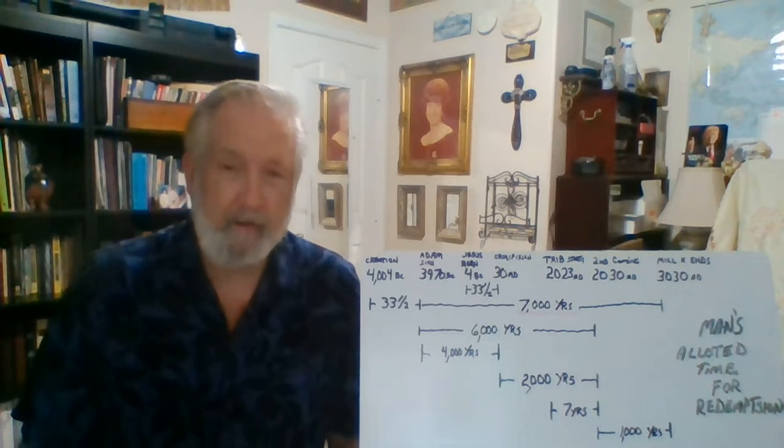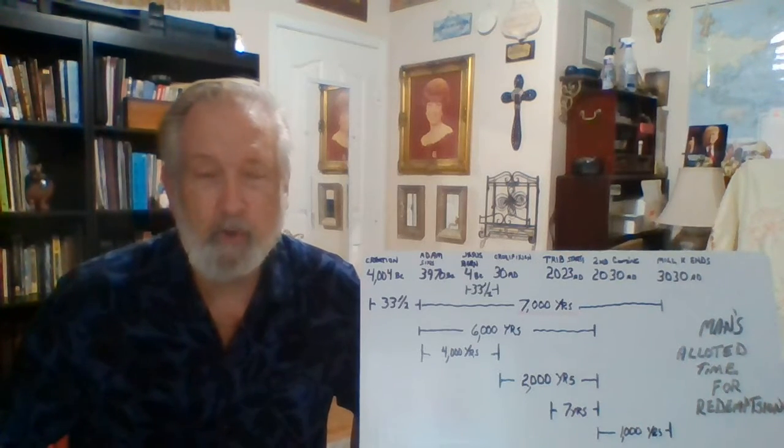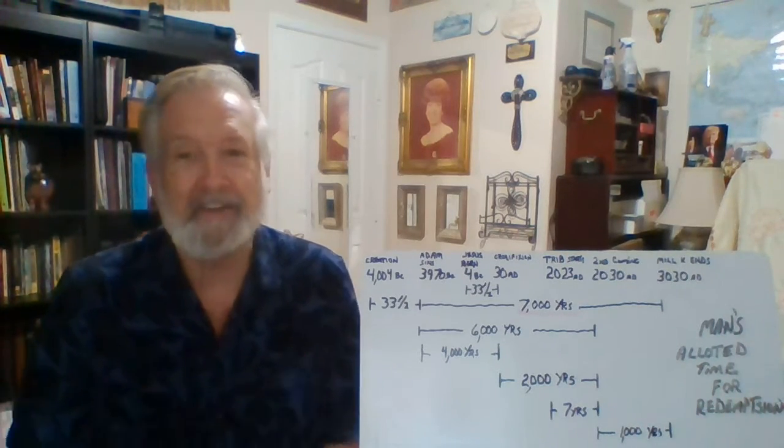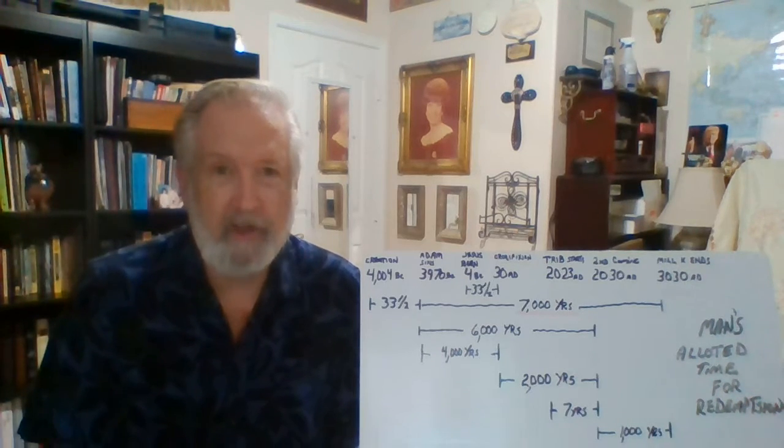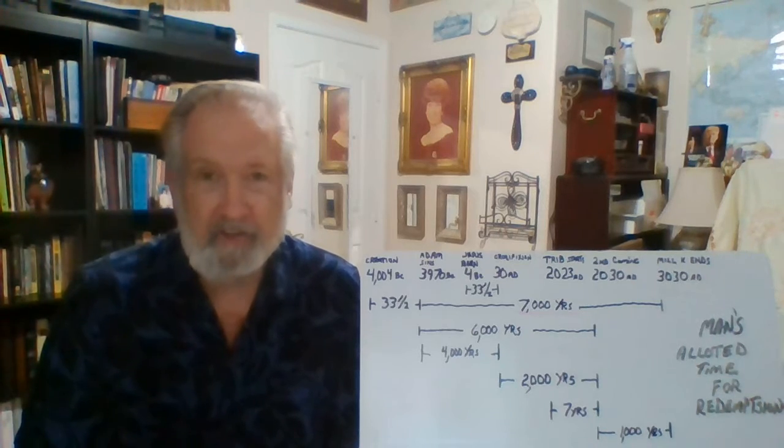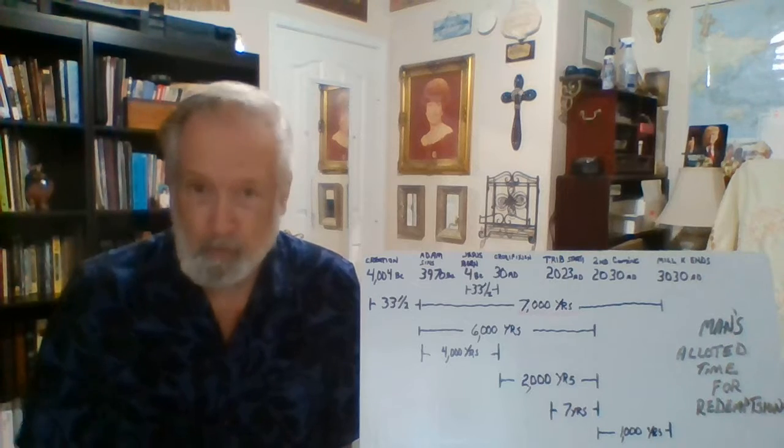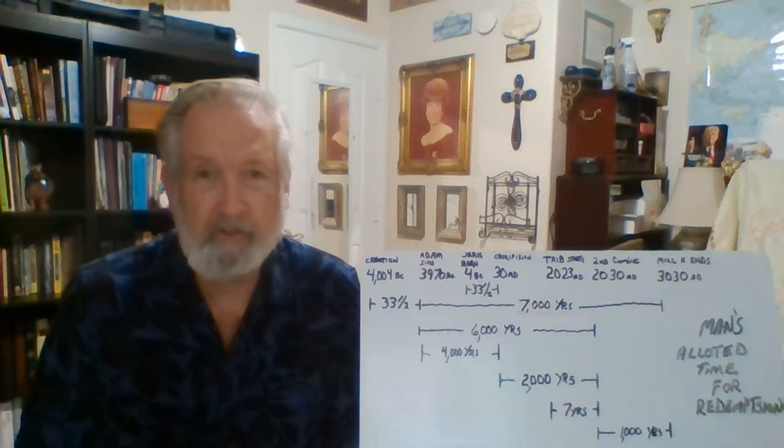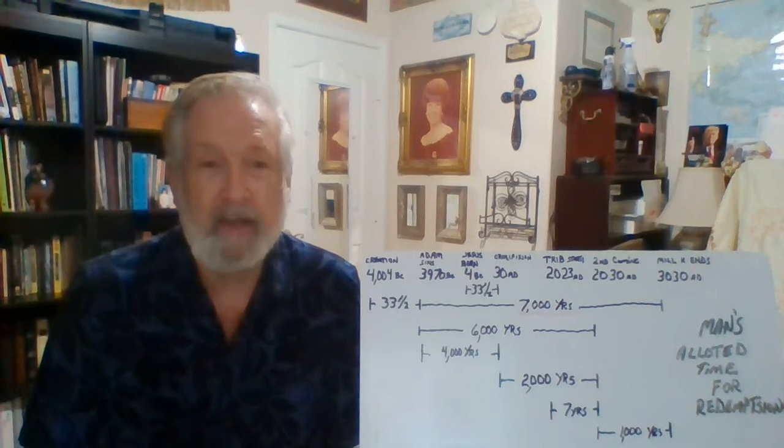Well that's basically 33 and a half years that are accredited to Jesus' sinless life. Now Adam is said to be a type of Christ. So Adam was sinless in innocency for an amount of time. Well, according to this, we're going to say that that's the same amount of time that Jesus lived on the earth, 33 and a half years.